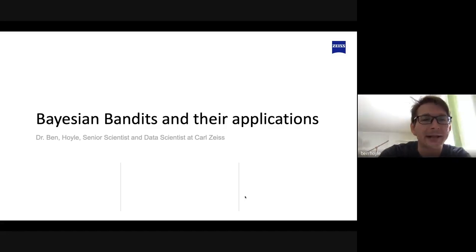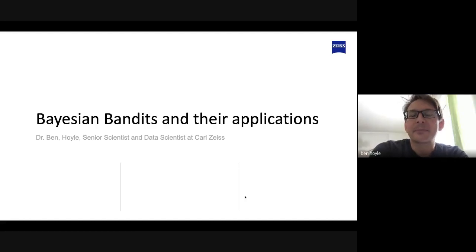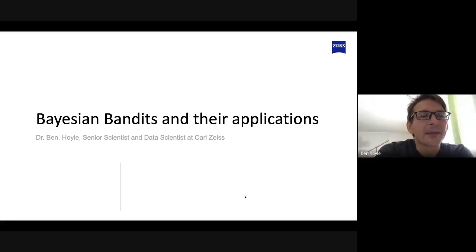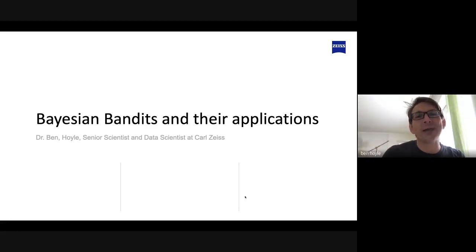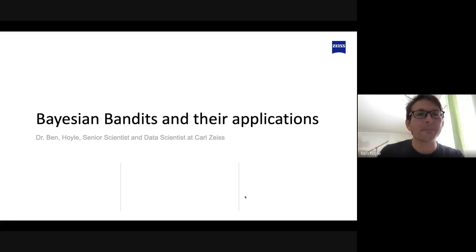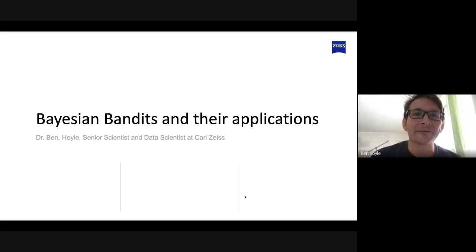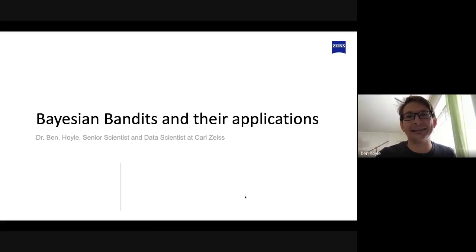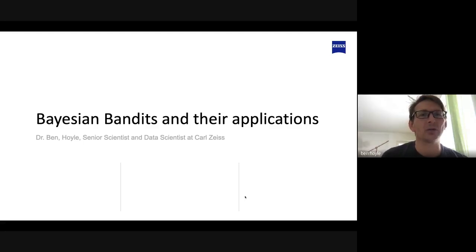I'll describe some of these problems in detail. The word 'Bayesian' here refers to how we're going to be including information about probabilities and updating probabilities. There are basically two ways of trying to estimate and deal with probabilities in statistics: the Bayesian approach and the frequentist approach.